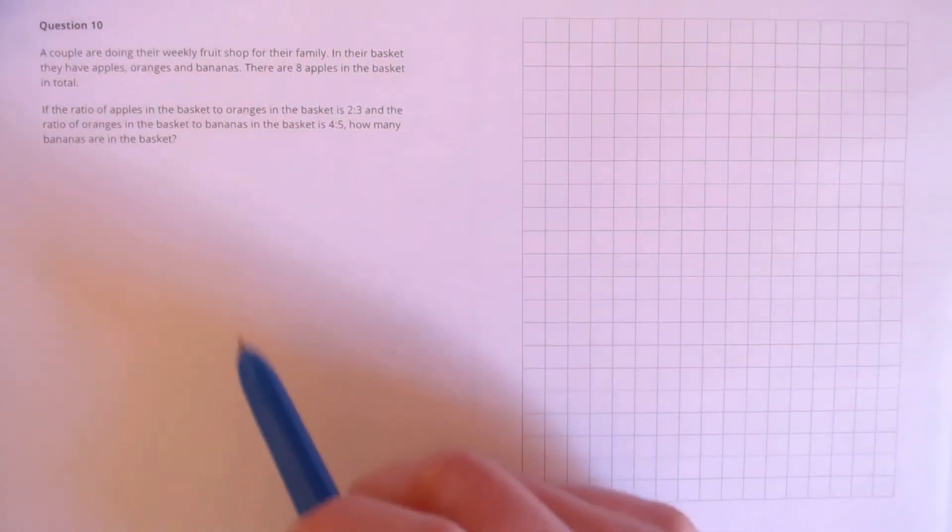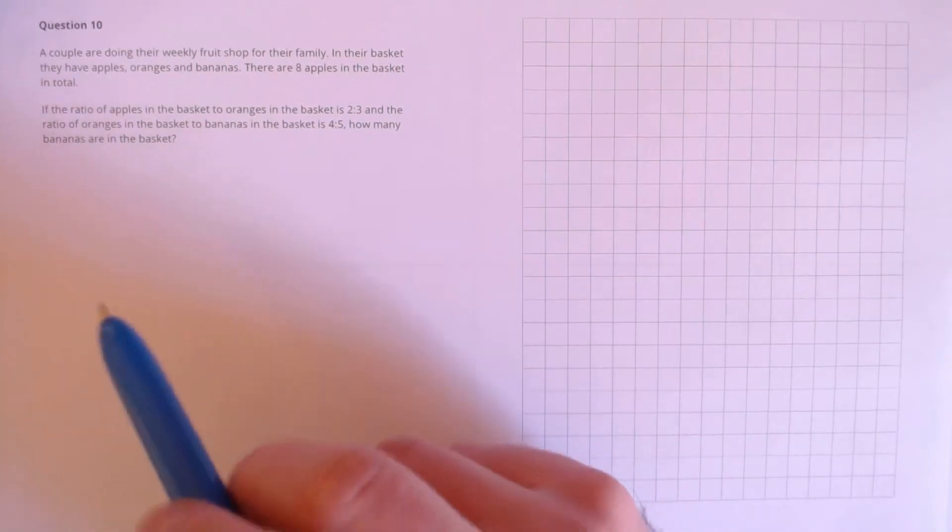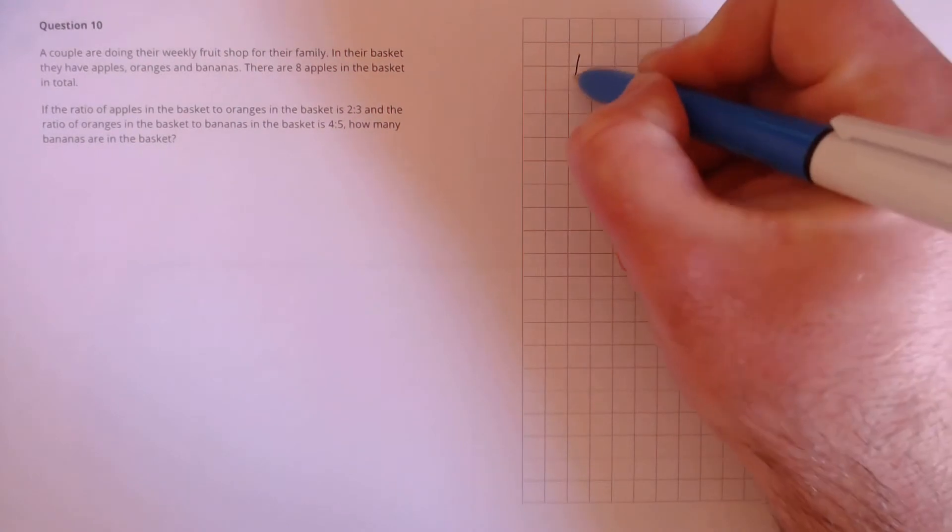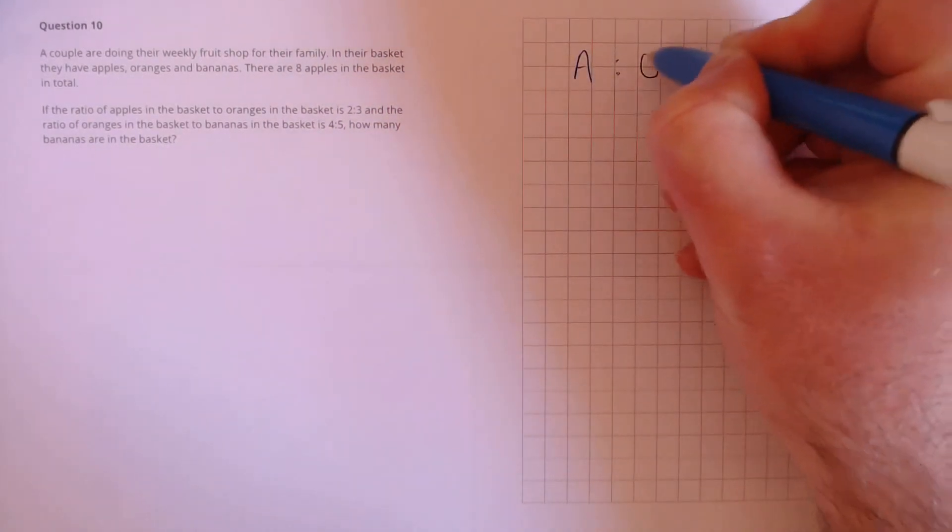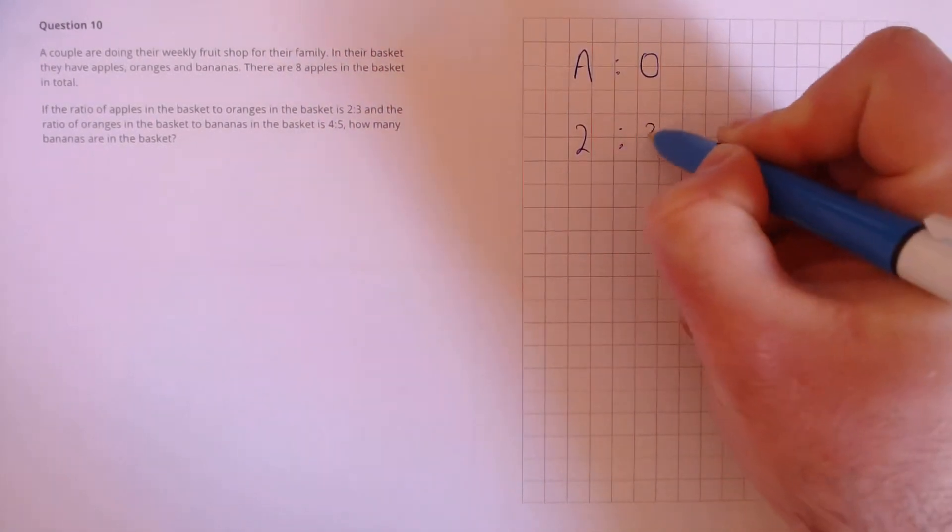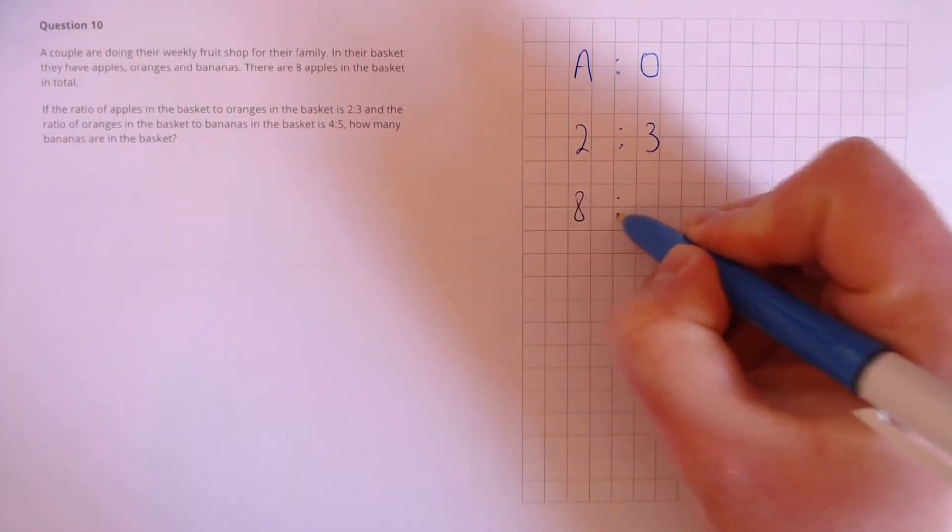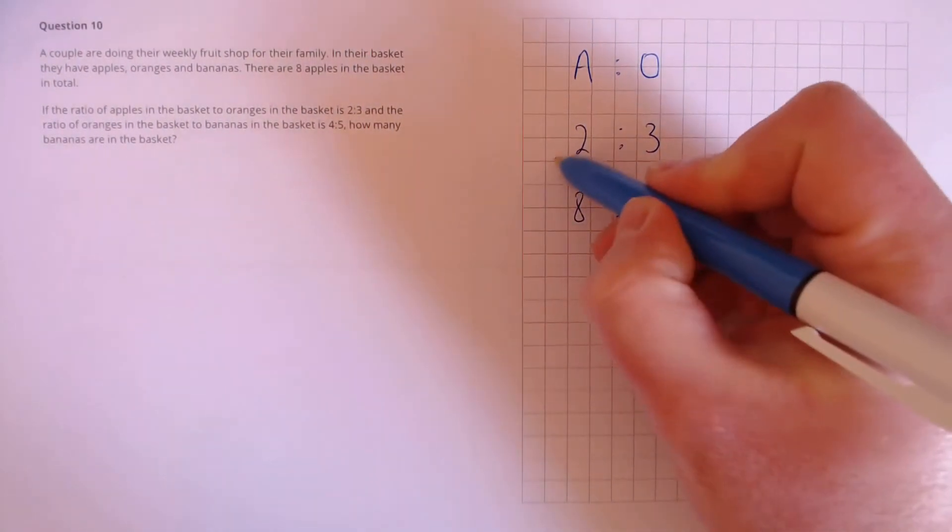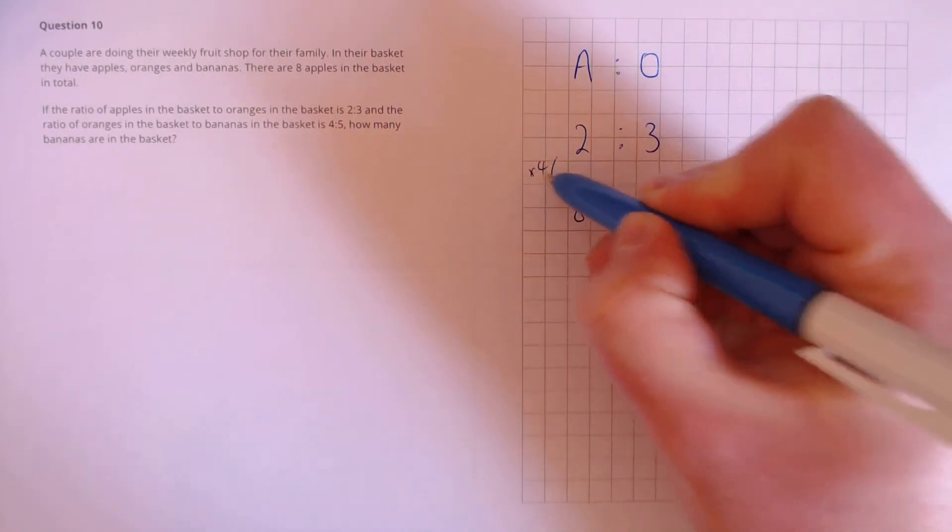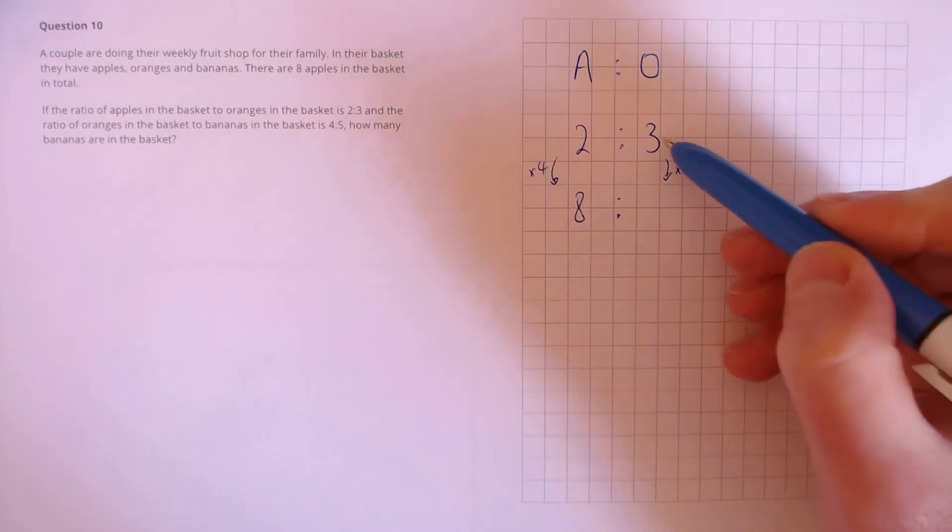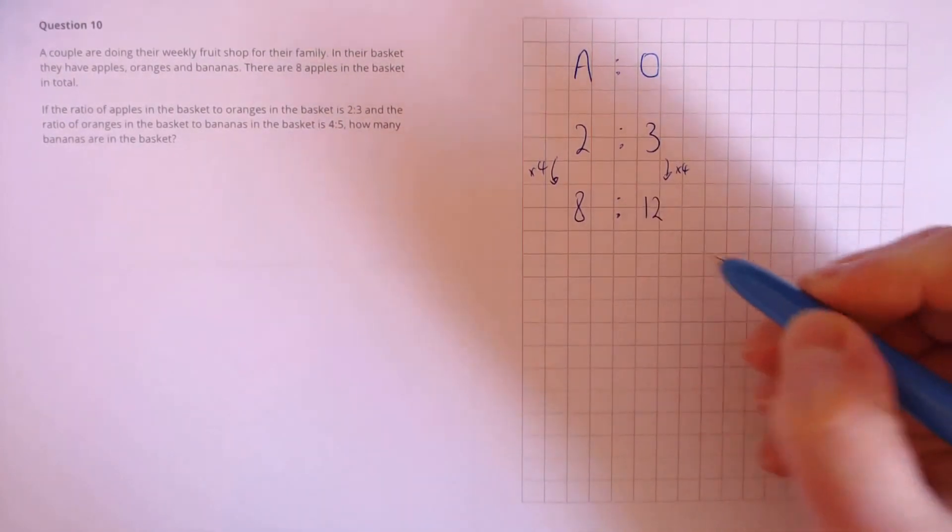This seems a little complicated at first, but let's just take it in parts. The ratio of apples to oranges is 2 to 3. So we're going to write down apples to oranges is 2 to 3. We know there are 8 apples in the basket, so this ratio has been multiplied by 4. So we need to do the same to the other side to keep it equivalent. So 3 times 4, there must be 12 oranges in the basket.